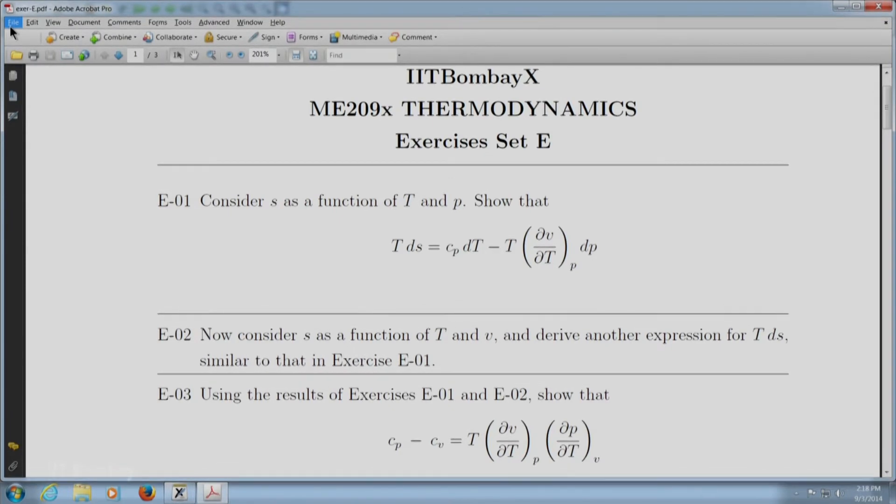the two TDS equations that we have derived to obtain an expression for CP minus CV. The expression is given and you will notice that the right hand side of this equation for CP minus CV is a function of only P, V and T.